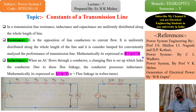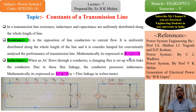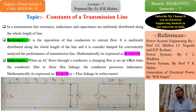हम लोग जो bundled conductor use कर रहे होते हैं, तो उसका कुछ cross-section area होगा, length तो होगी है, क्योंकि हम लोग 500 km, 300 km, 200 km की line बनाते हैं. And ρ is the constant — यह एक property है particular conducting material की. हर एक material की conducting resistivity होती है. Resistivity के respect में बात करें तो silver की resistivity सबसे low होती है, copper उससे थोड़ा नीचे है, उसके अलावा aluminium और iron जो हैं, iron की resistivity ज्यादा होती है, aluminium की उससे कम, copper की उससे भी कम, और silver की सबसे कम होती है.